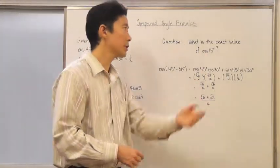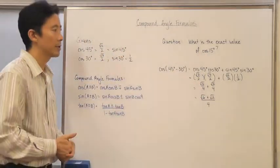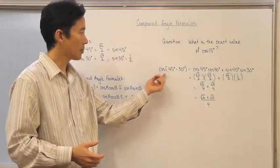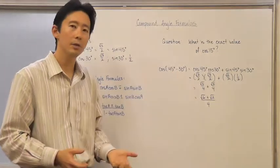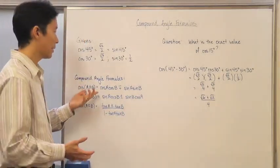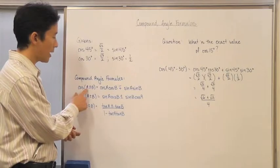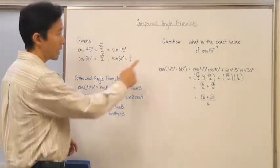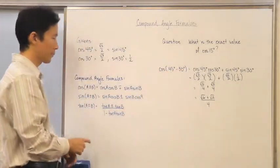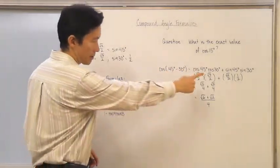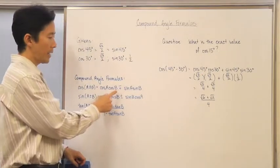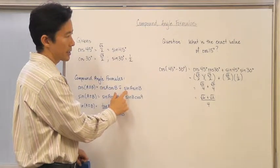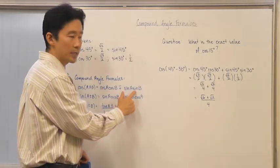Going back to the original question: what is the exact value of cosine of 15? The cosine of 15 is exactly the same as the cosine of 45 degrees minus 30 degrees. Using the compound angle formula for cosine of A minus B, we have the cosine of A — where A is 45 degrees — times the cosine of B — where B is 30 degrees — plus the sine of 45 degrees times the sine of 30 degrees.